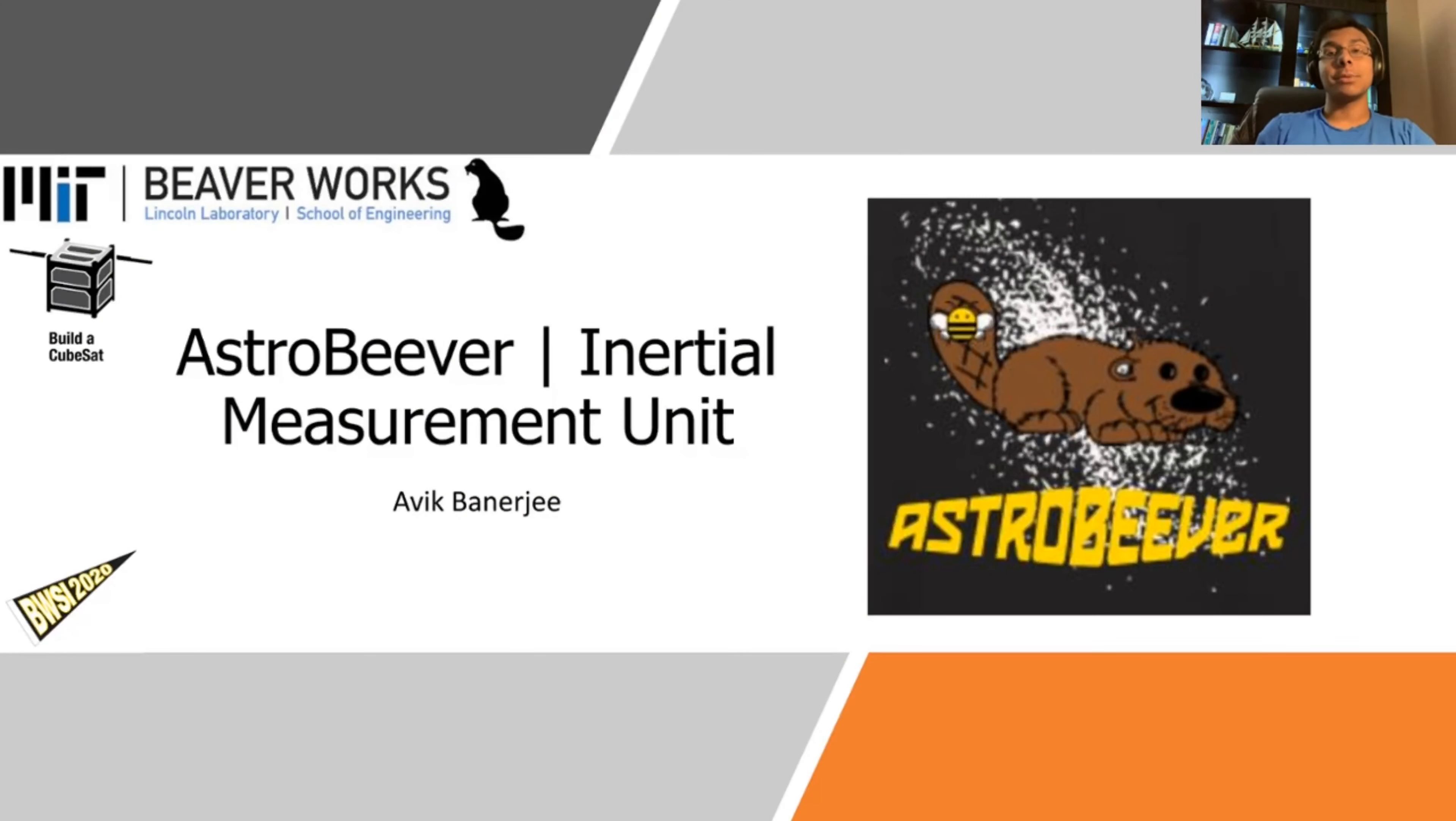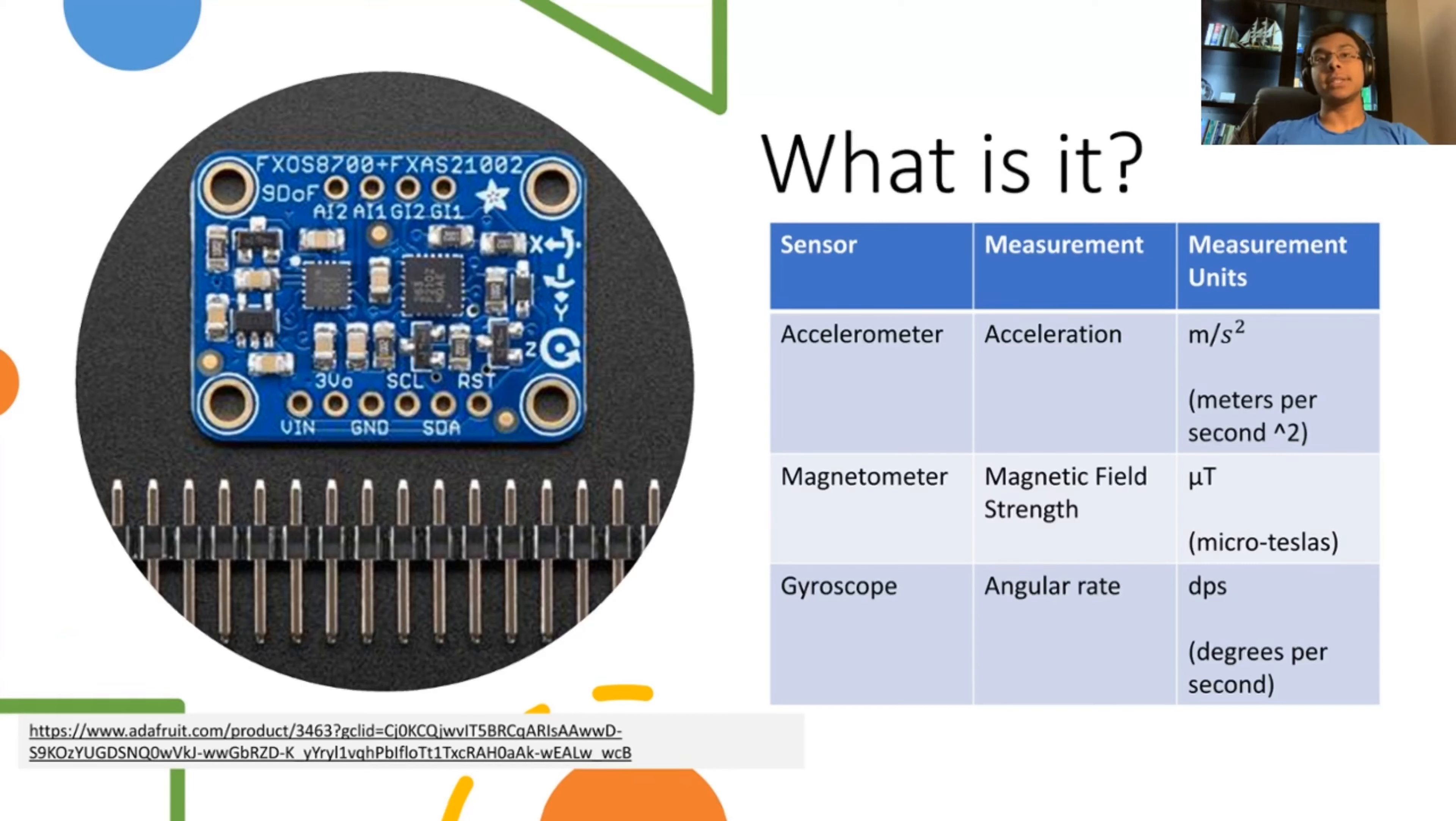Hello, my name is Avik Banerjee and I'm part of the AstroBeaver CubeSat team. Today, I'll be talking about the inertial measurement unit, known as the IMU for short, and how it played a crucial role in our CubeSat flight demo. First off, let's begin with what is an IMU. An IMU is a small electronic device that measures an object's position, orientation, and or acceleration.